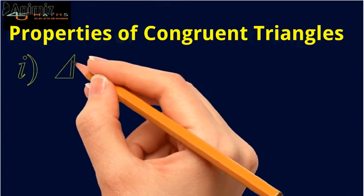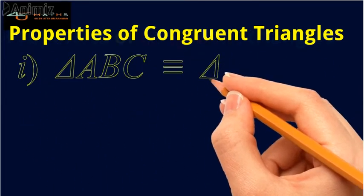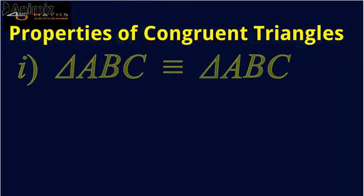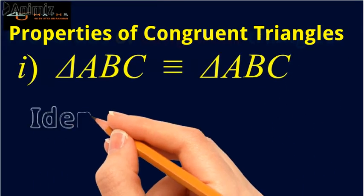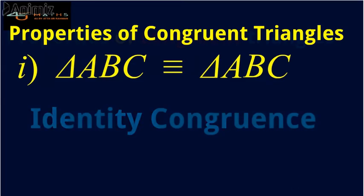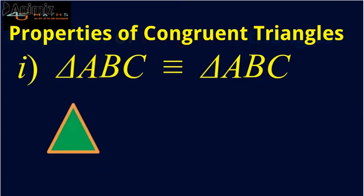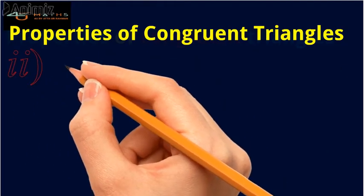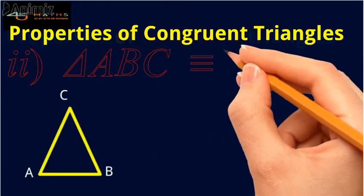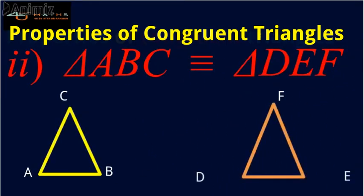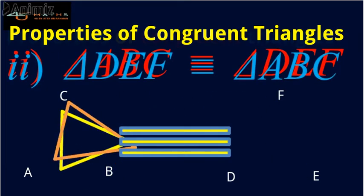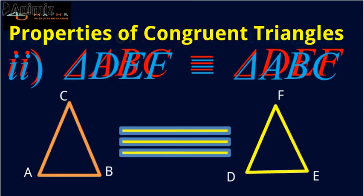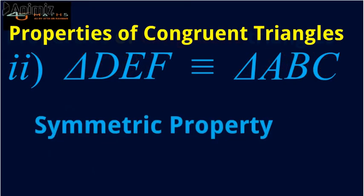Properties of congruent triangles. Number one: triangle ABC is congruent to triangle ABC. This is what we call the identity congruence — that is, every triangle is congruent to itself. Number two: if triangle ABC is congruent to triangle DEF, then triangle DEF is congruent to triangle ABC. This property is known as the symmetric property of congruence.